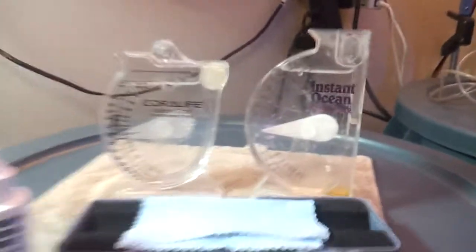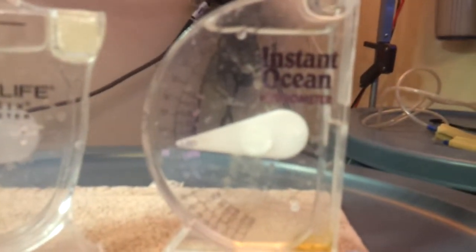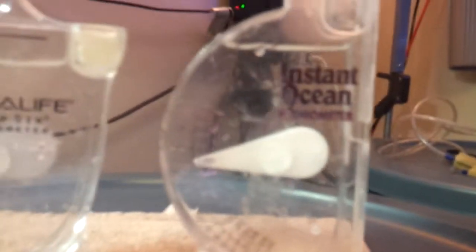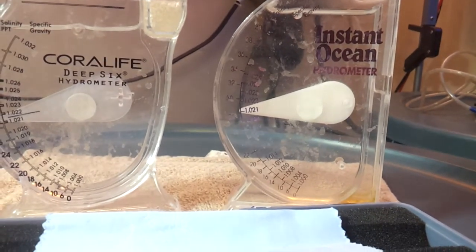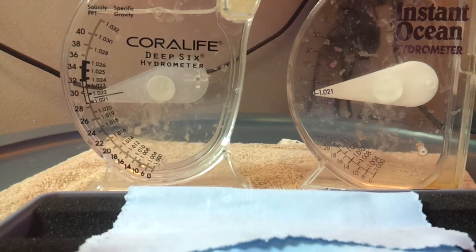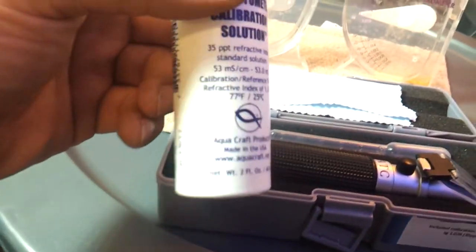Now here are two different salt checkers or whatever you want to call these things. The Instant Ocean and Coralife. Now my Instant Ocean is a little over the 21. And this one is near the 22. Now which one is correct? I don't know. So I go by this.